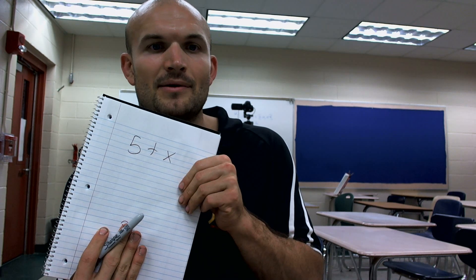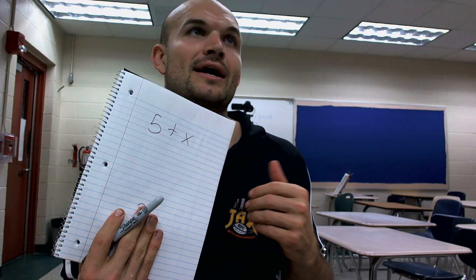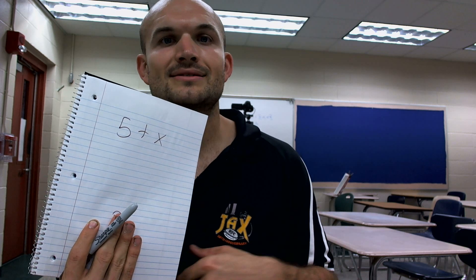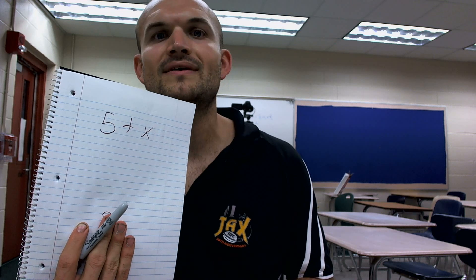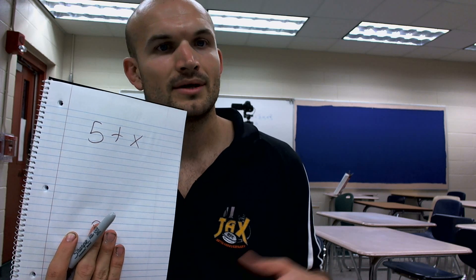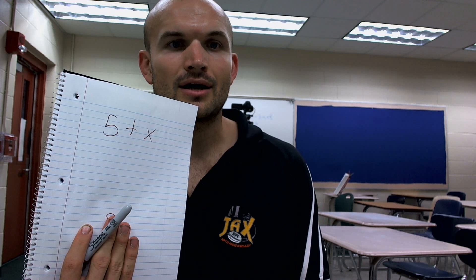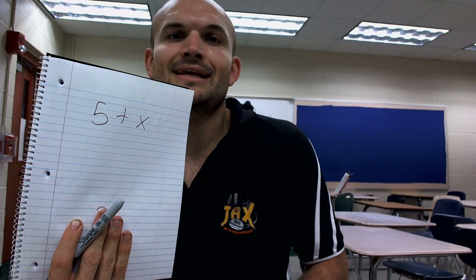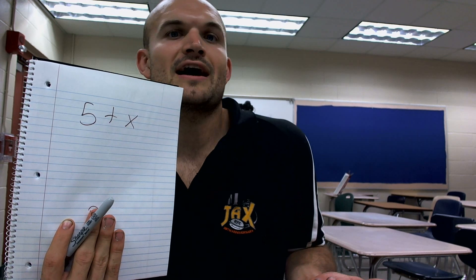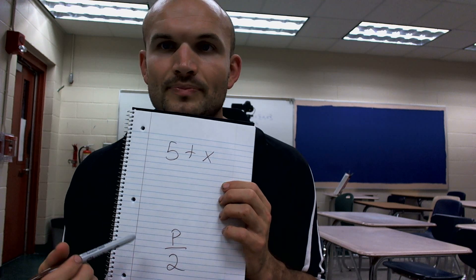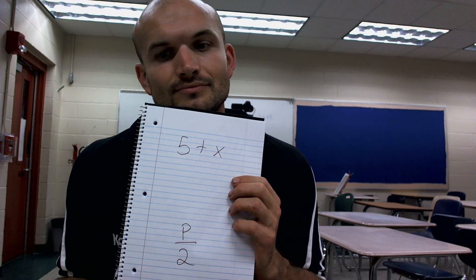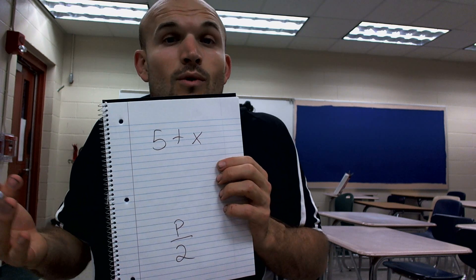So therefore, if I want to say 5 plus X, that could mean X could represent anything — the number of how tall I am. So 5 could represent inches, so 5 plus X. Or you could just say P divided by 2, where P could represent another quantity of things.